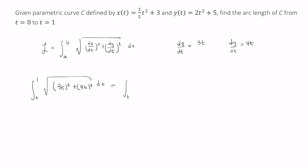So this is the integral from 0 to 1 of 9t squared plus 16t squared dt. So the integral from 0 to 1 of 25t squared dt. This simplifies to just the integral from 0 to 1 of 5t dt.